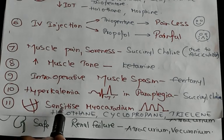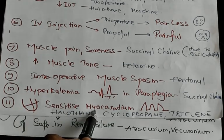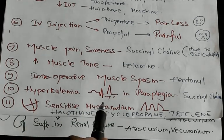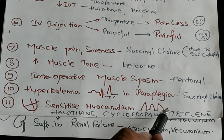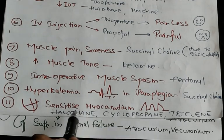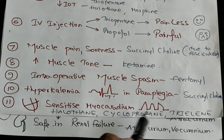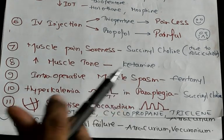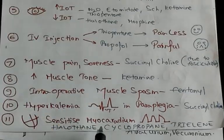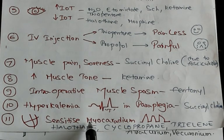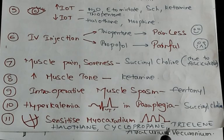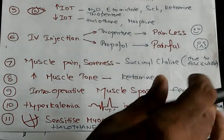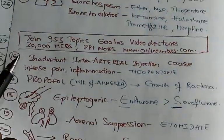The heart is very sensitive — please do not use these agents. Ventricular tachyarrhythmias can occur. Halothane, cyclopropane, and trilene are all harmful to the heart. The heart is sensitive — please don't give halothane, cyclopropane, or trilene. That is what you have to remember.